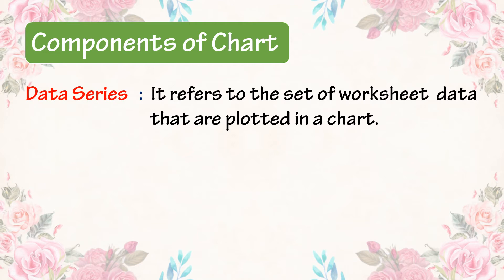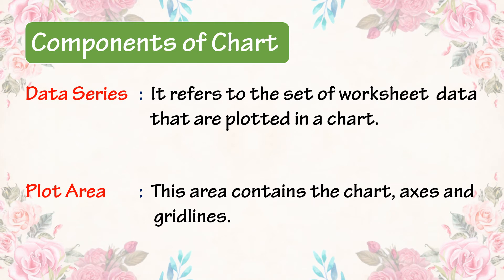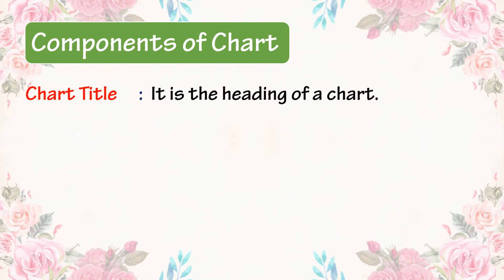Now we can discuss in detail about the components of a chart. The first component is data series, which refers to the set of worksheet data that are plotted in a chart. Plot area: this area contains the chart, axis, and grid lines. Chart title: it is the heading of a chart.